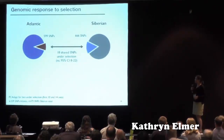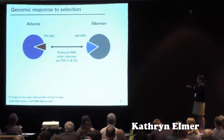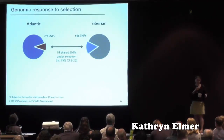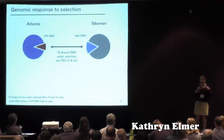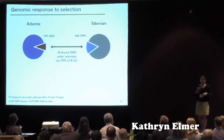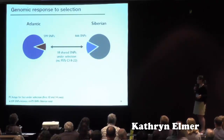Similarly, looking at signals of selection — here we've separated the Atlantic lineage and the Siberian lineage — we have about 600 SNPs in each that show a signal characteristic of a response to positive selection, genomic regions really showing signals of divergence under selection. Though we have about 600 in each lineage, we found only 18 SNPs shared between both lineages, which is in fact not significantly different from our null distribution.